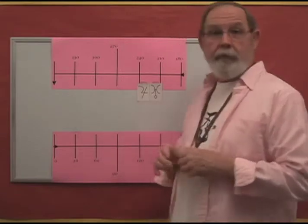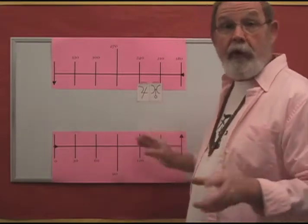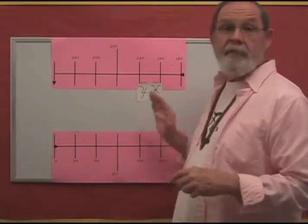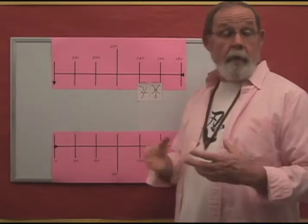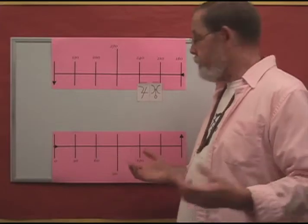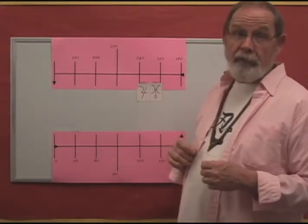So what happens when Jupiter and Uranus are here is that you're going to have to be very careful with investments, with the things that you share with other people. Now, you could make a lot of money suddenly. You could lose a lot of money suddenly.